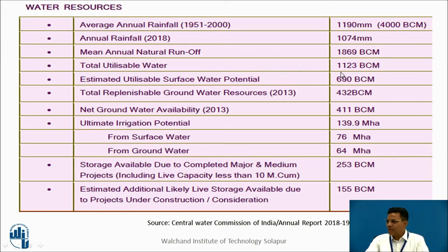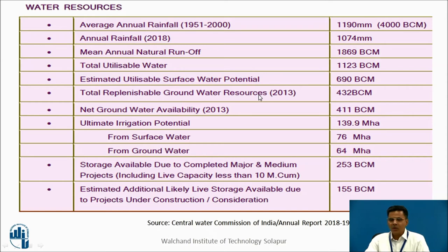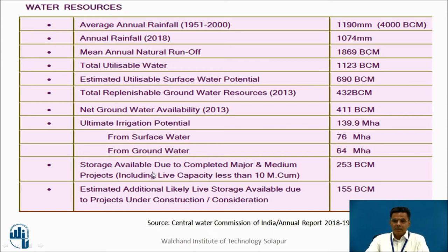Total utilisable water is 1,123 billion cubic metres. Estimated utilisable surface water potential is 690 billion cubic metres, and total replenishable groundwater resources in 2013 were observed to be 432 billion cubic metres. Ultimate irrigation potential of India is 139 million hectares — 76 million hectares from surface water and 64 million hectares from groundwater. Storage available due to completed major and medium projects is 253 billion cubic metres, and estimated additional live storage from projects under construction is 155 billion cubic metres.